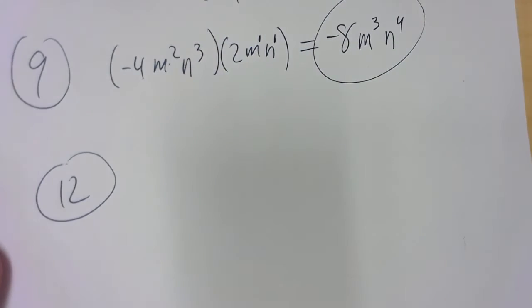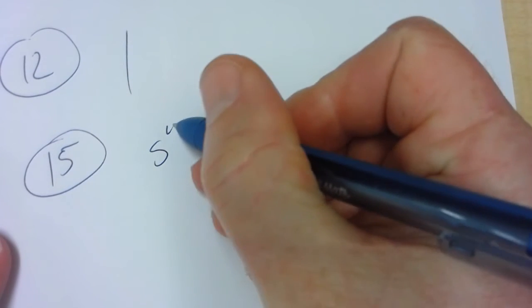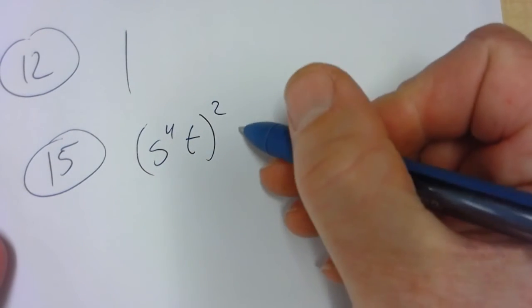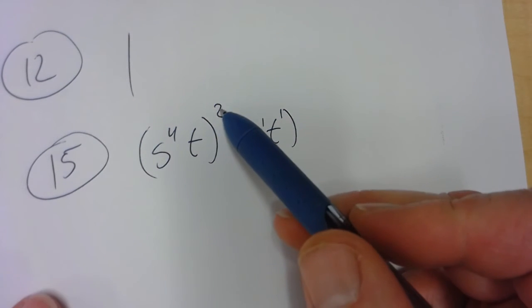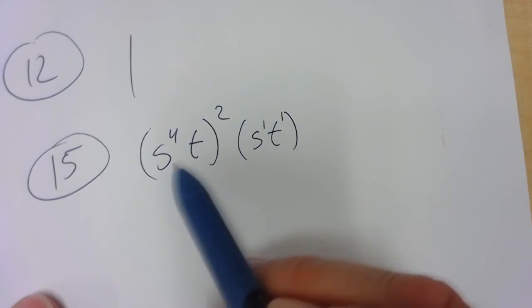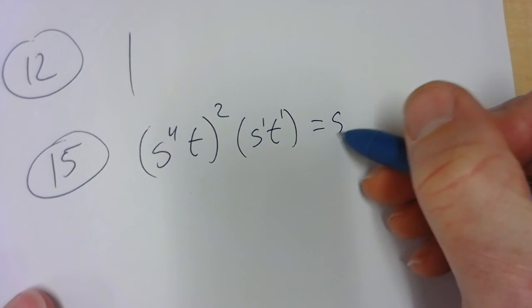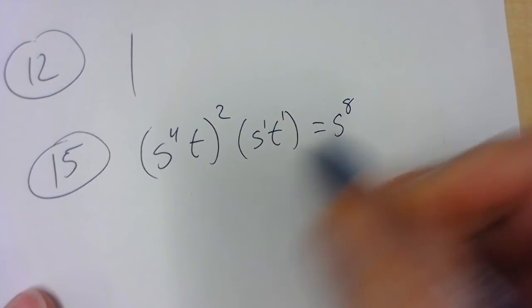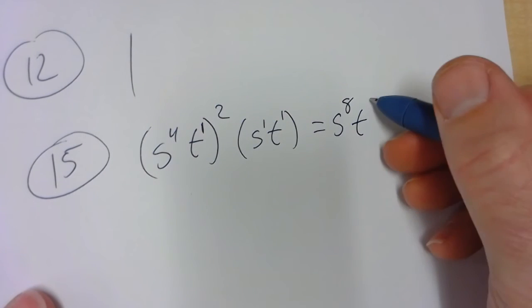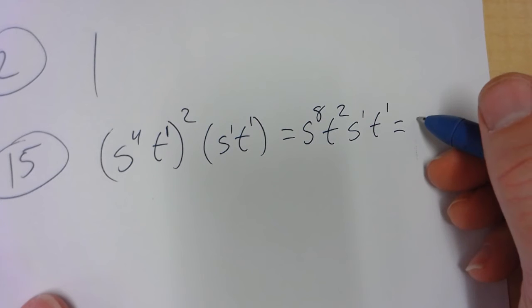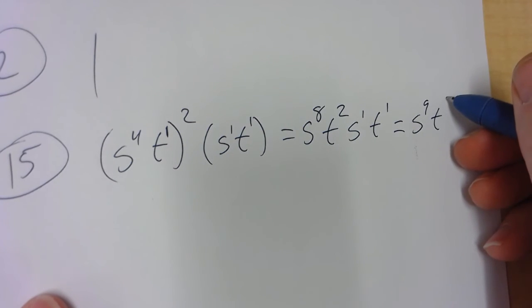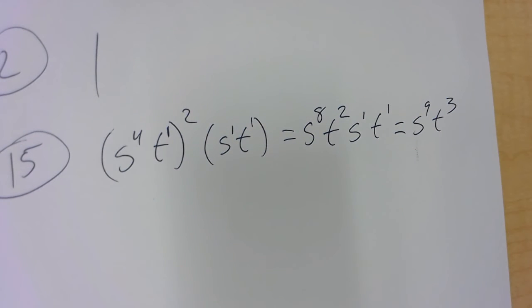Number 12: anything to the 0 power is 1. Number 15: it's s to the 4th t, and that gets squared, and then times s t. The s and t are to the 1st power. You have to always follow the order of operations, so these get squared first, then we multiply like terms together. So it's s — power to a power — 2 times 1, and that's s to the 2nd t squared times s to the 1st t to the 1st. Then we just add: s to the 9th, t to the 3rd. That's number 15.